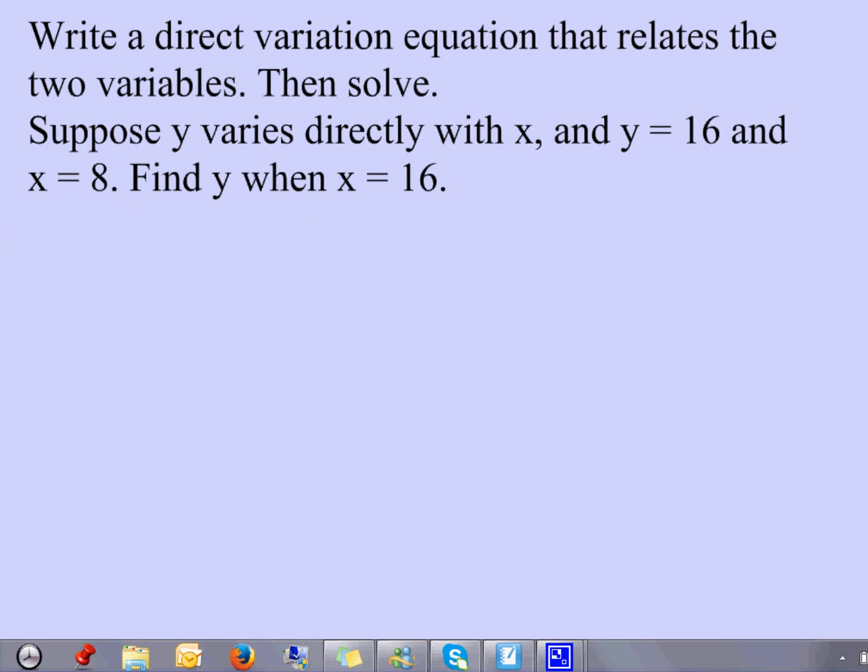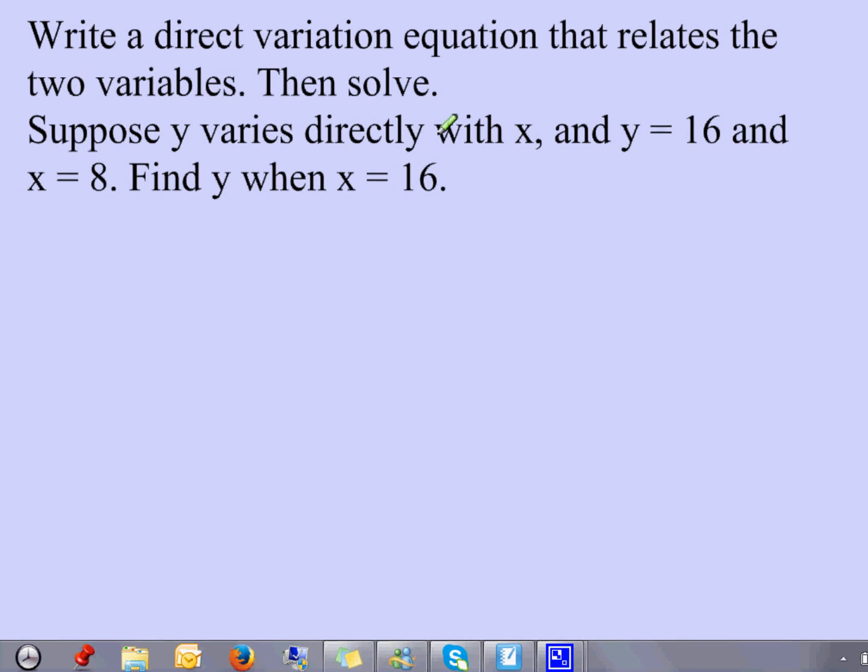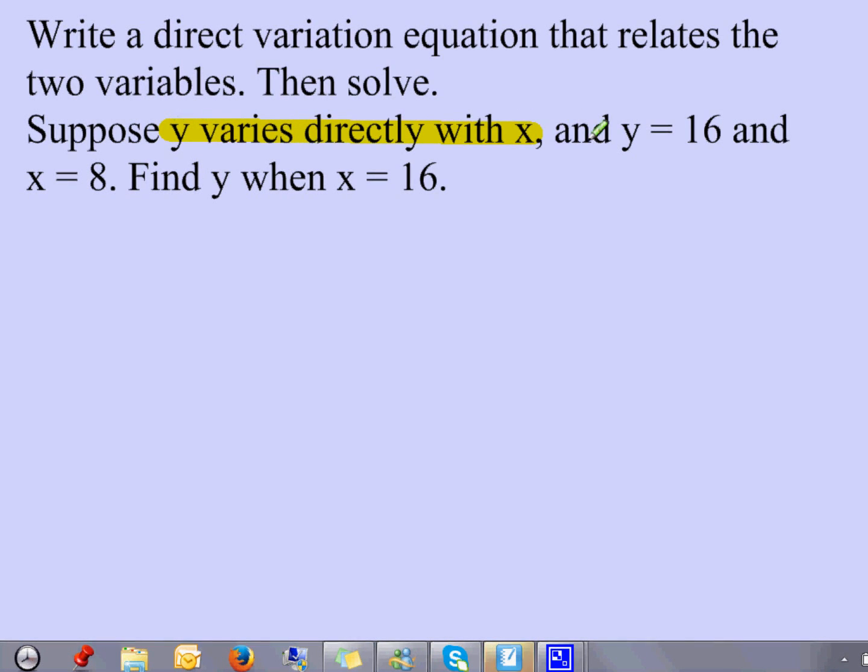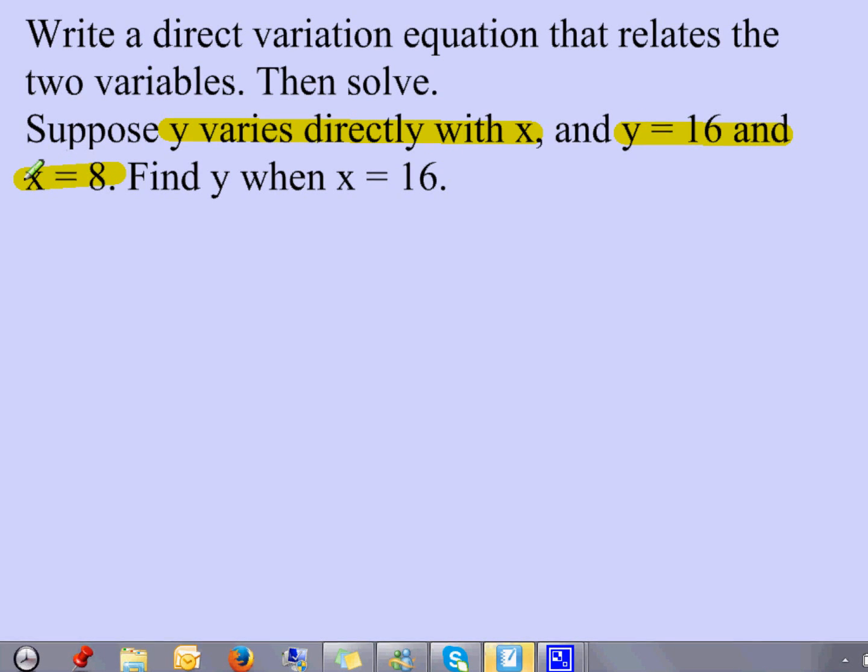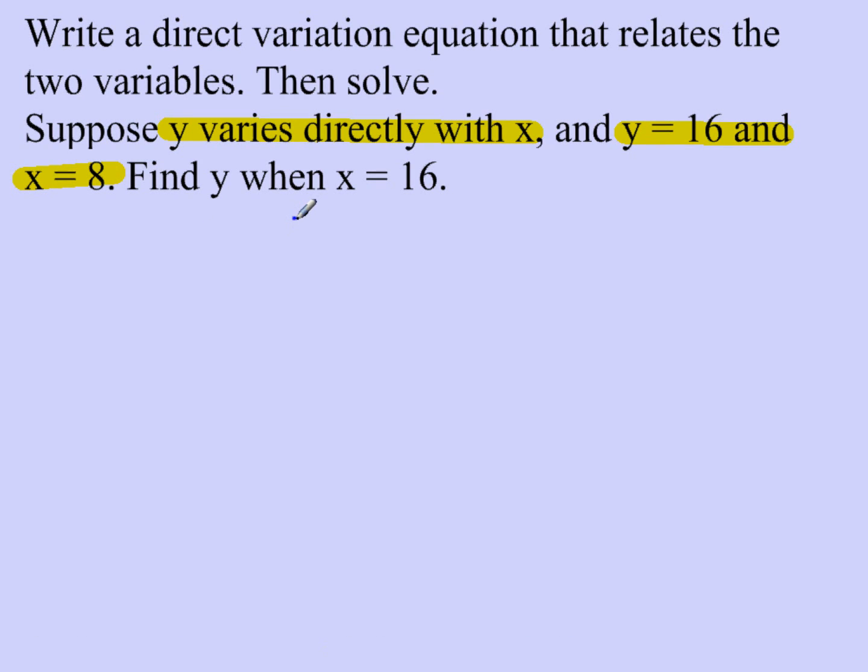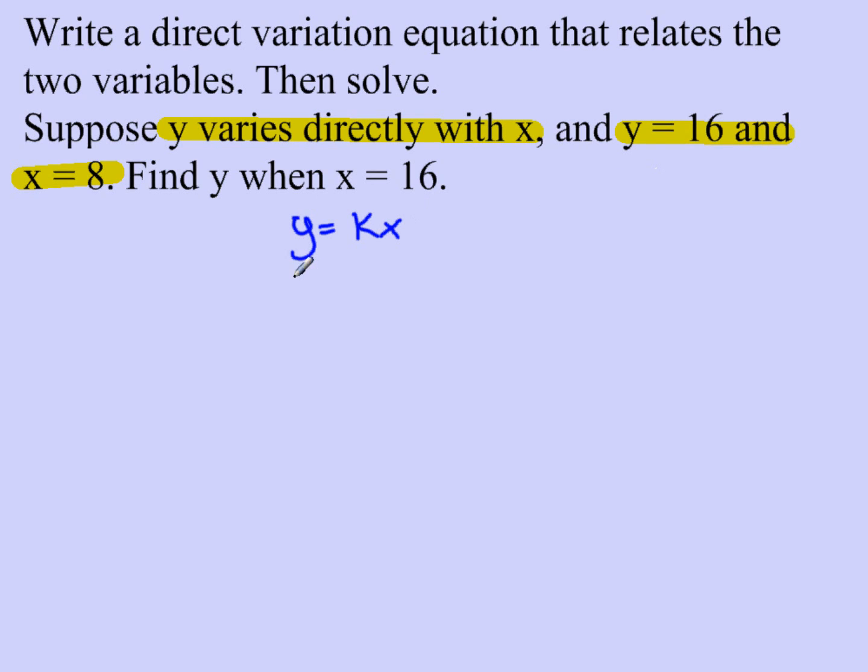The first thing we're going to take care of is writing an equation because we know that y varies directly with x, and that y is 16 and x equals 8. So our direct variation equation that we're using is y equals kx. Well, y is 16, k we don't know, x is 8.